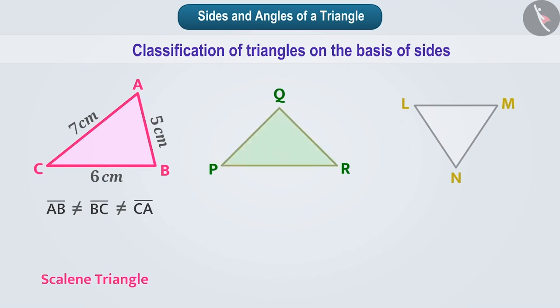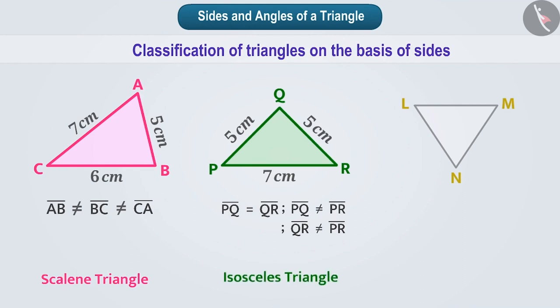Now observe this. Triangle PQR has PQ equal to 5 cm, QR equal to 5 cm and PR equal to 7 cm. Here PQ is equal to QR. A triangle with only 2 sides equal is called an isosceles triangle. In a triangle, we can show 2 equal sides using the same sign in this way.